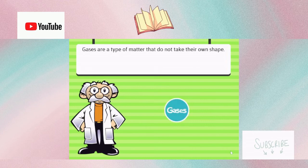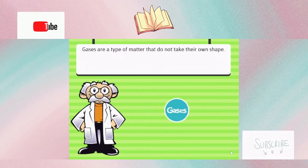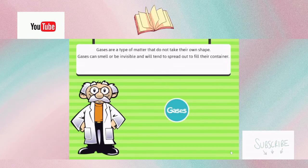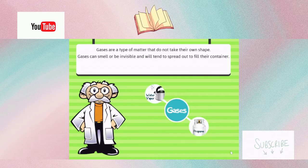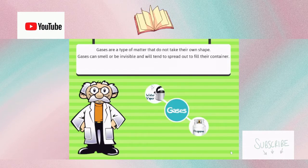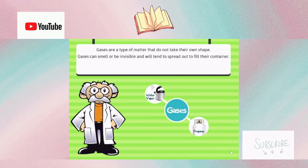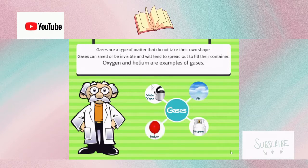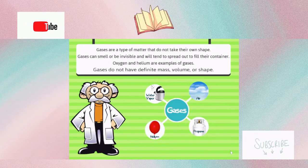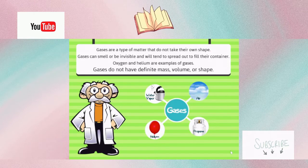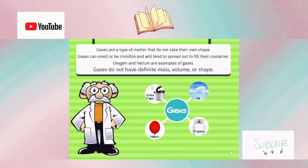Gases are a type of matter that do not take their own shape. Gases can smell or be invisible and will tend to spread out to fill their container. Oxygen and helium are examples of gases. Gases do not have definite mass, volume, or shape.